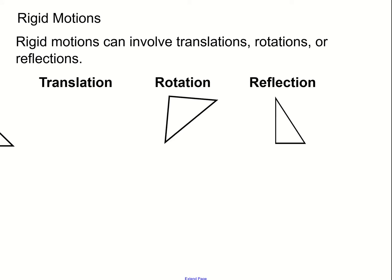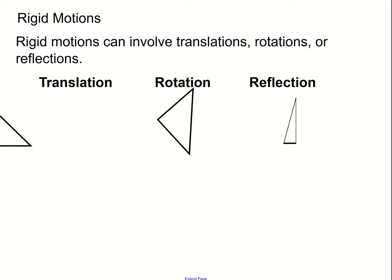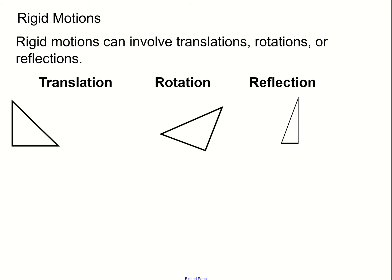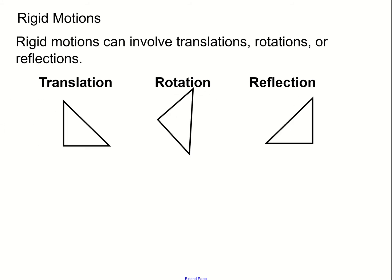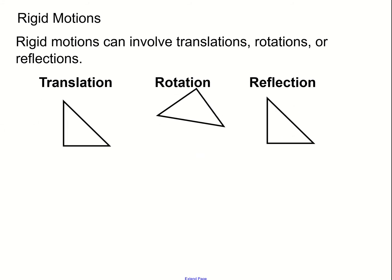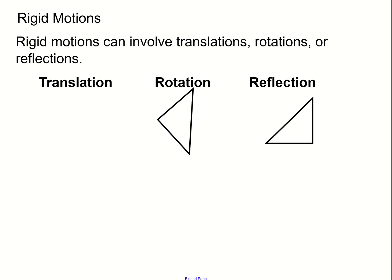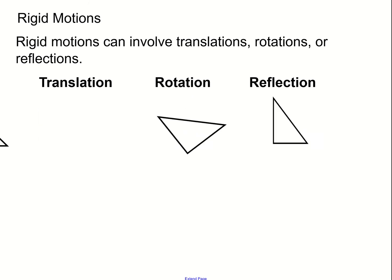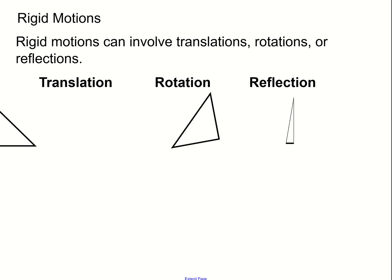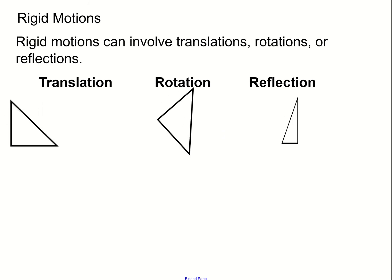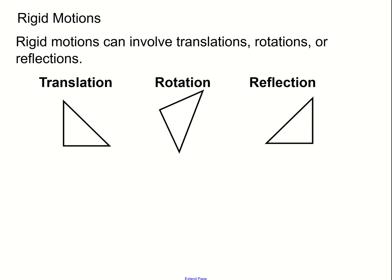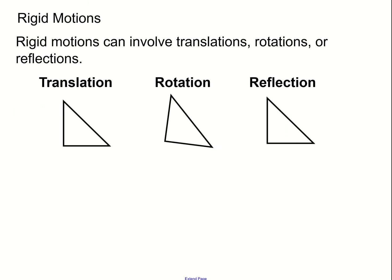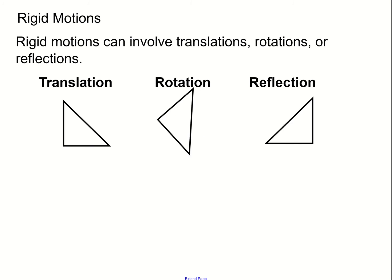These are some examples of translations. A translation means a gliding motion — essentially you're moving a figure from one point to another, or you can think of it as gliding from one spot to another.